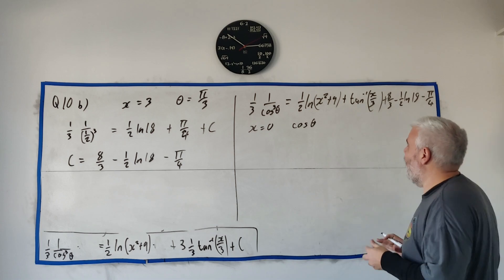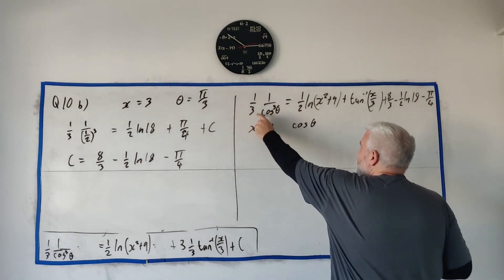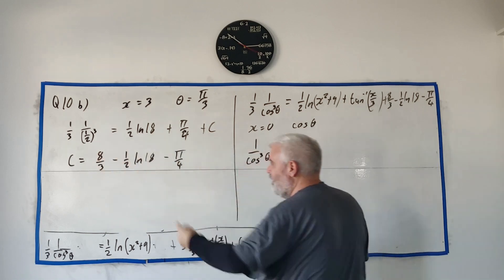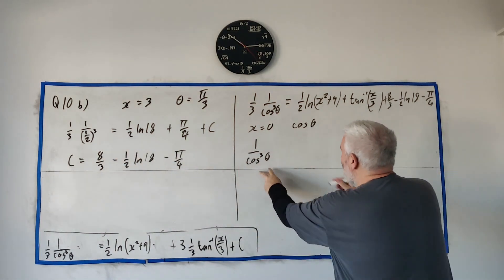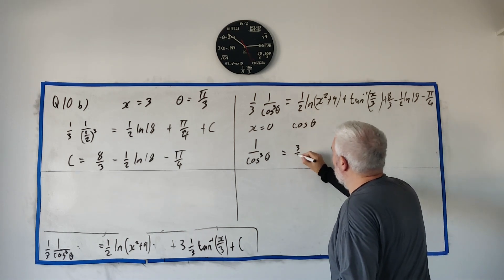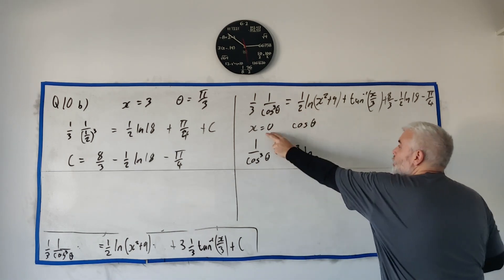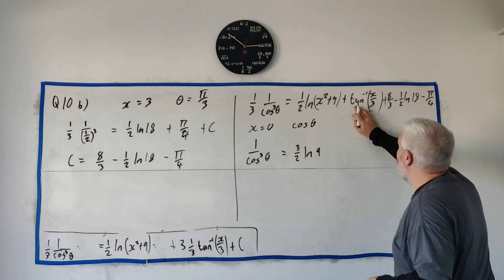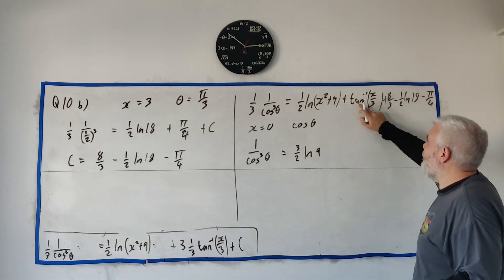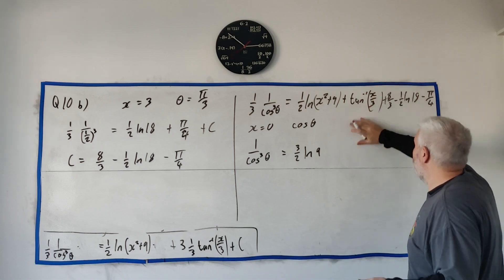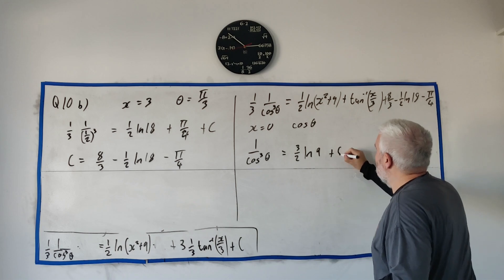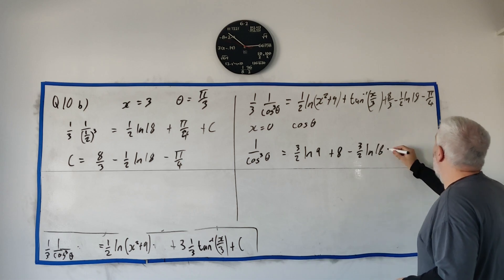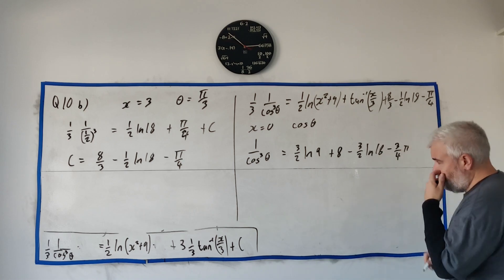We put x equals 0 in here and find 1 over 3 cosine cubed theta, then multiply by 3 and get the inverse cube root. Let's do it. I'll multiply everything by 3, so I get 1 over cosine cubed. This equals 3 over 2 natural log of 9. The inverse tangent of 0 is 0, so that's gone. 8 over 3 times 3 is 8, minus 3 over 2 natural log 18, minus 3 over 4 pi.